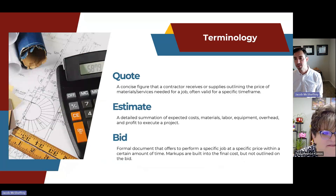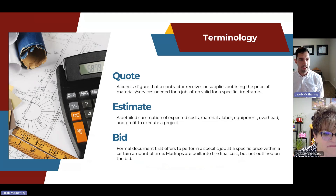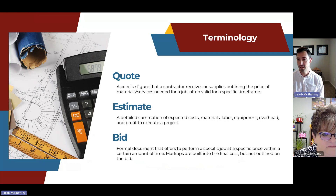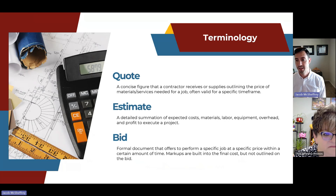Let's look at some common terminology used in government contracting. The three terms — quote, estimate, and bid — are used interchangeably, but it's important to identify what each actually means. A quote is a concise figure that a contractor receives or supplies, outlining the price of materials and services needed for a job. It's often valid for a specific timeframe — usually 30 days — because material prices fluctuate depending on supply and demand.